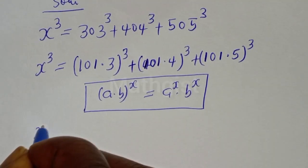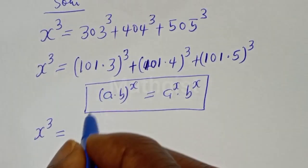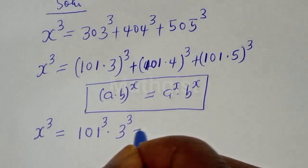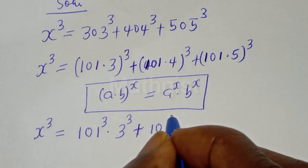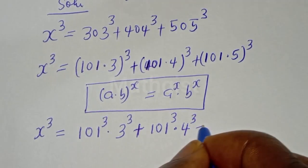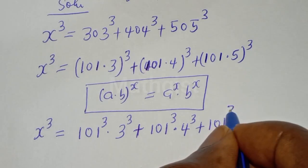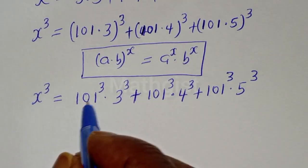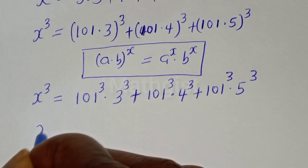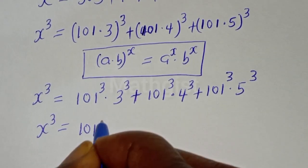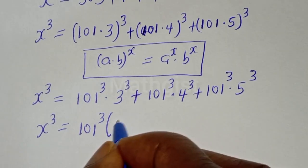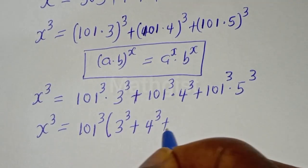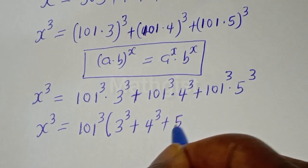So S raised to power 3 is equal to 101 to the power of 3 multiplied by 3 raised to power 3, plus 101 to the power of 3 multiplied by 4 raised to power 3, plus 101 to the power of 3 multiplied by 5 raised to power 3. We can see that 101 to the power of 3 is common — let's bring it out. S raised to power 3 is equal to 101 to the power of 3 times bracket 3 raised to power 3 plus 4 raised to power 3 plus 5 raised to power 3.